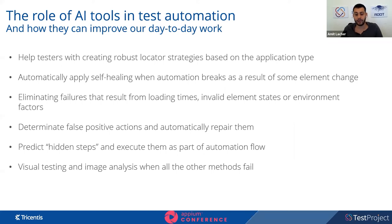AI can also determine false positive actions and automatically repair them — this is what the Automation Assistant does. It detects these actions, goes back in the test, reruns previous steps, and automatically repairs them. It can predict hidden steps and execute them as part of the automation flow. It also provides visual testing and image analysis when all other methods fail.